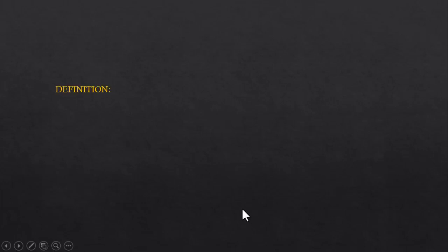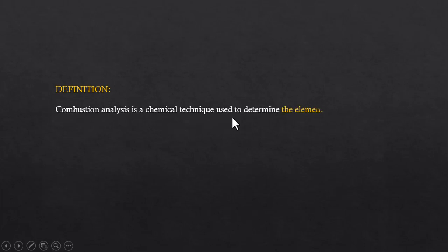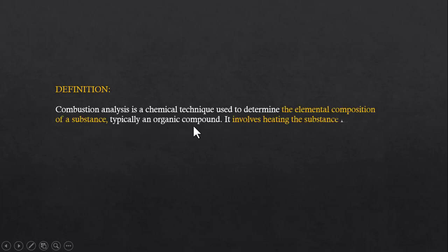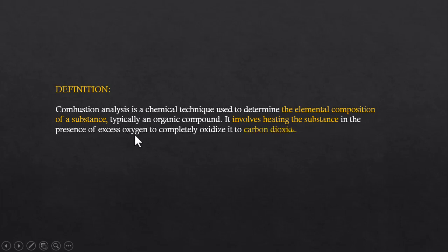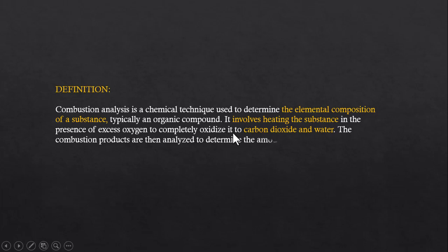Let's look at the definition first. Combustion analysis is a chemical technique used to determine the elemental composition of a substance, typically an organic compound. It involves heating the substance in the presence of excess oxygen to completely oxidize it to carbon dioxide and water. The combustion products are then analyzed to determine the amounts of carbon, hydrogen, and oxygen in the original substance.